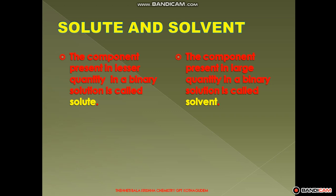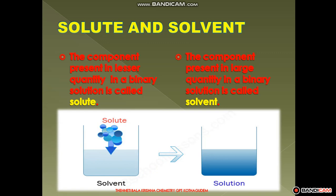Depending upon the quantity ratio of the components present in the solution, they are classified into two types. The component present in lesser quantity is called solute, and the component present in larger quantity is called solvent. In the solution, the solute particles are fewer compared to the solvent component. The mixture of these is the solution.